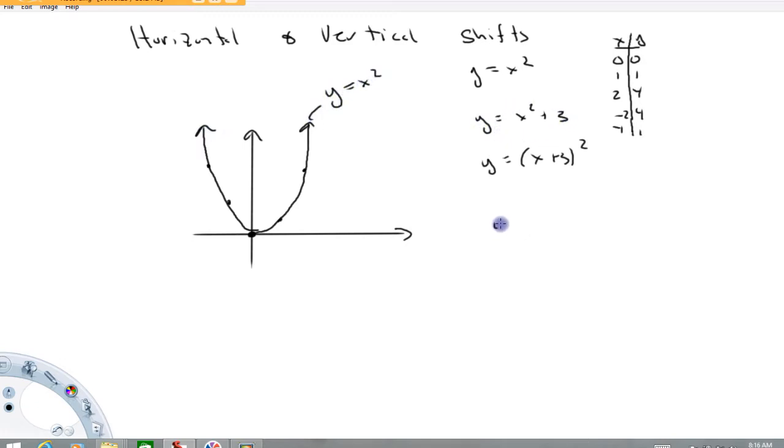Now we're going to look at this one, y equals x squared plus 3. Again, I'm going to generate a table, x, y. Let's see, 0 squared, 0 plus 3, 3. 1 squared is 1 plus 3 is 4. 2 squared, 4 plus 3, 7. Let's look at a couple on the left. Negative 1 squared is 1 plus 3 is 4.